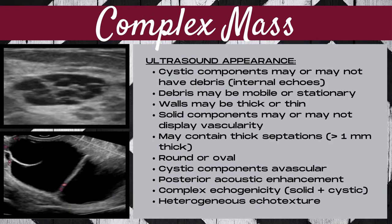The ultrasound appearance of a complex mass is highly variable and dependent on whether the mass is suspicious or more benign in nature. It may or may not have debris or internal echoes within the cystic components, and this debris can be mobile or stationary. The walls can be thin or thick, the solid components may or may not display vascularity, and the mass may or may not have thick septations — defined as septations greater than one millimeter thick.